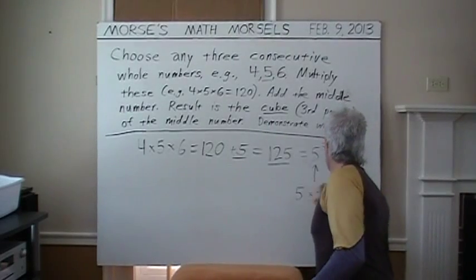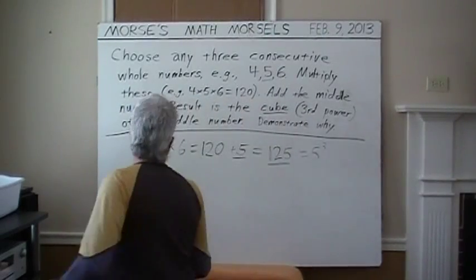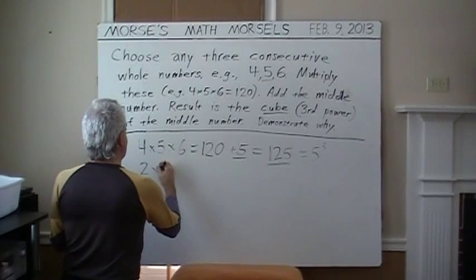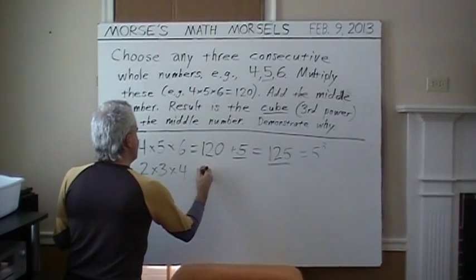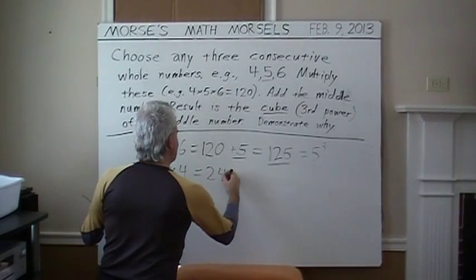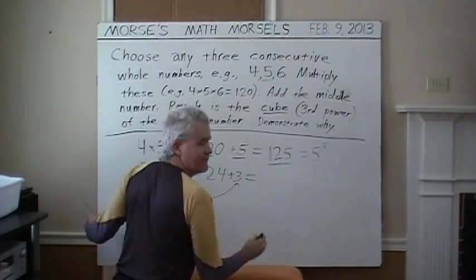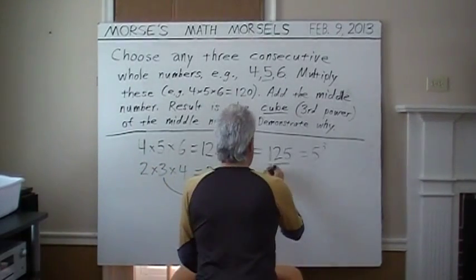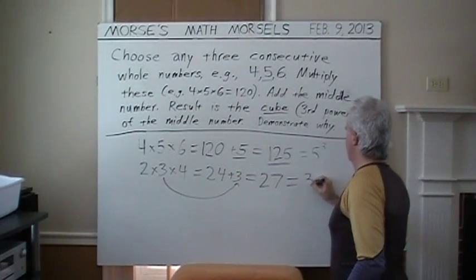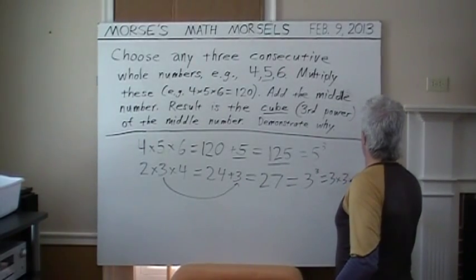Does this always work, though? Well, let's check and see. Make a little more room in this whiteboard. I'm going to choose some smaller whole numbers. I'm going to choose 2 times 3 times 4. That product is 24. Then add that middle number plus 3 is 27. And claiming that it's the cube of that middle number. Seems to work again.